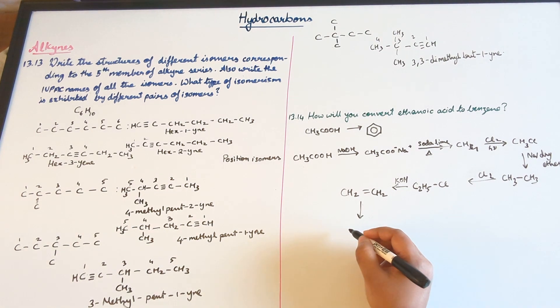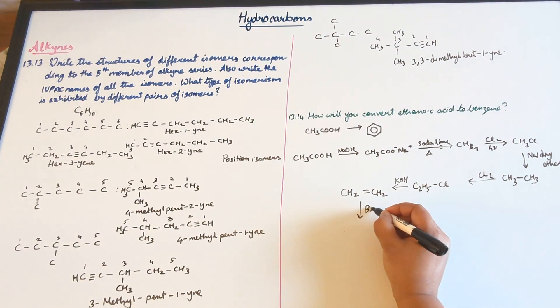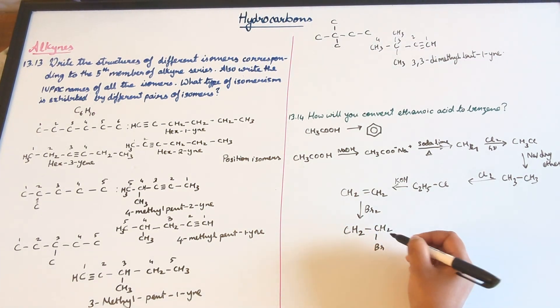Now this alkene is reacting with bromine to get a vicinal dihalide.